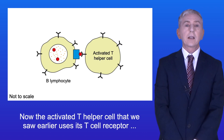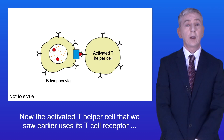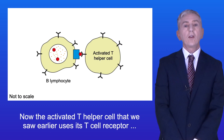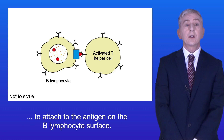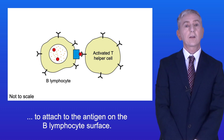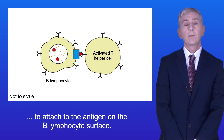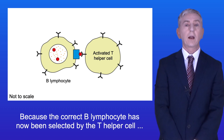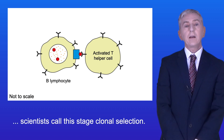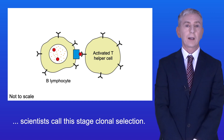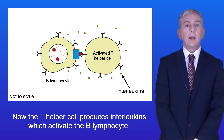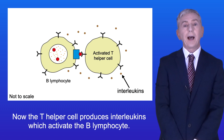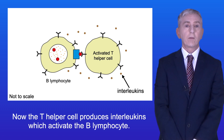Now the activated T helper cell uses its T cell receptor to attach to the antigen on the B lymphocyte's surface. Because the correct B lymphocyte has now been selected by the T helper cell, scientists call this stage clonal selection. Now the T helper cell produces interleukins, which activate the B lymphocyte.